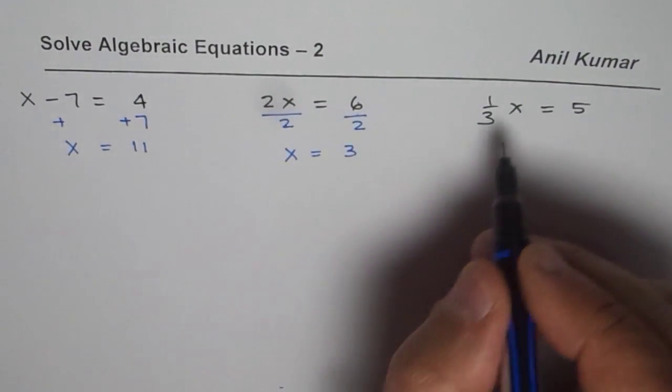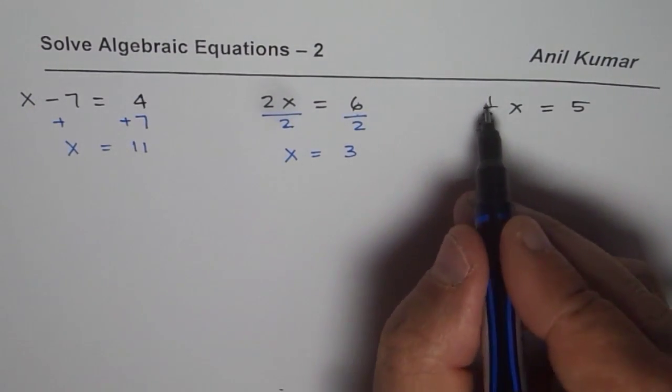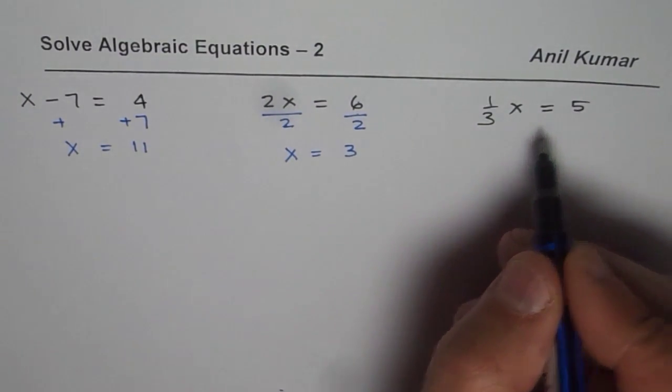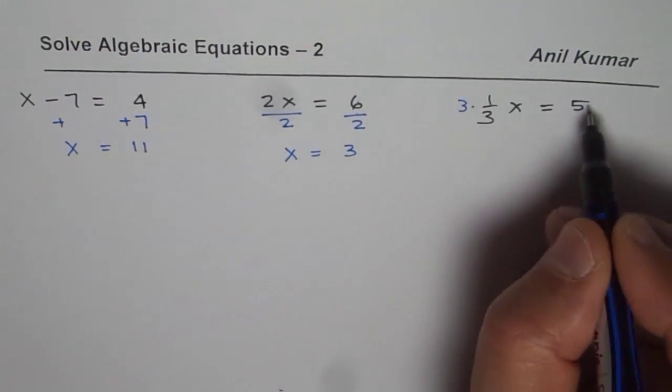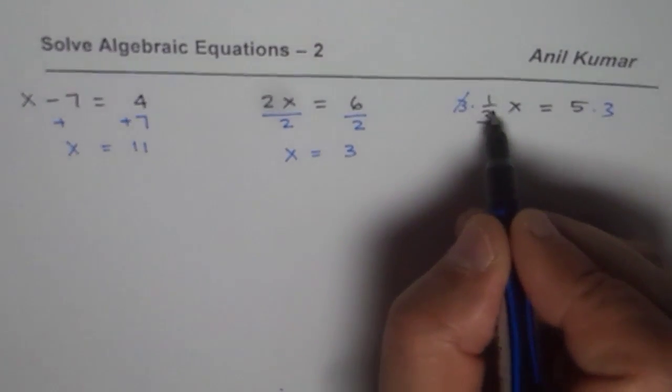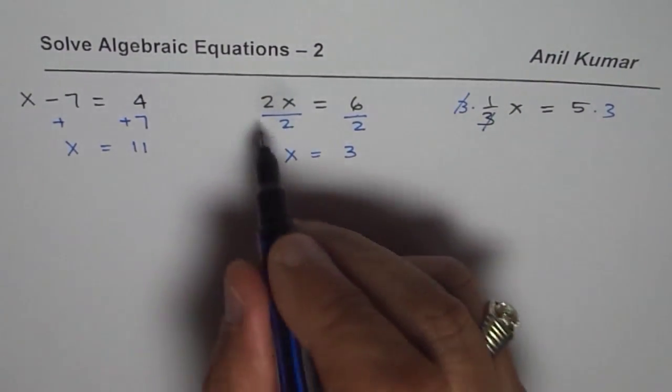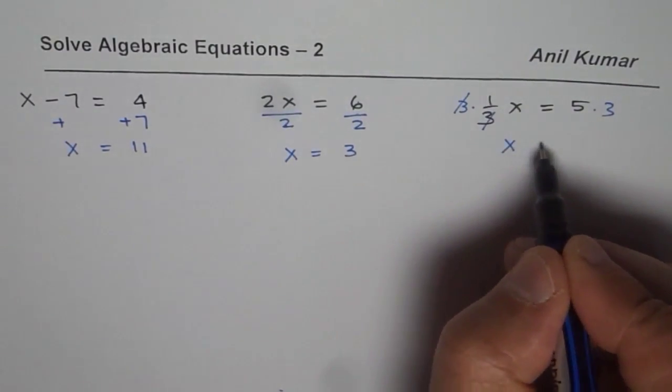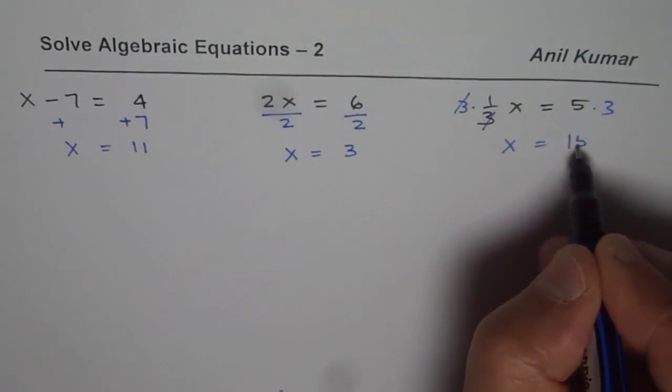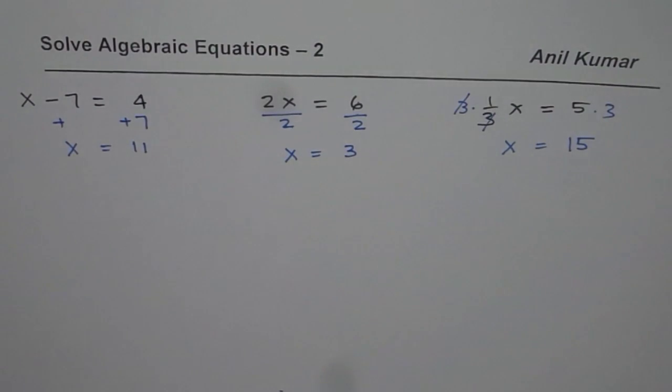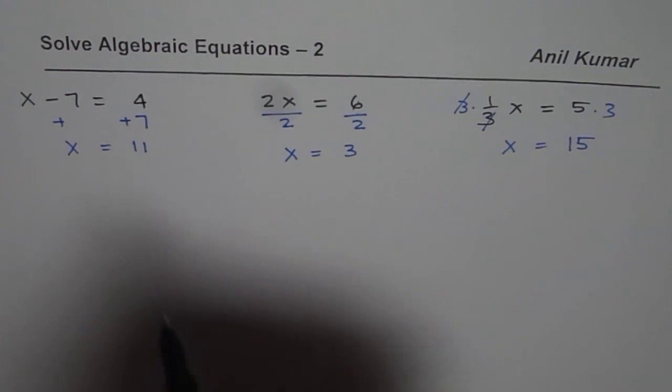is 3. In this particular case since division is there, multiply by 3 on both sides then 3 and 3 cancels. We get x equals 5 times 3 is 15, so those were the methods which we learned while doing